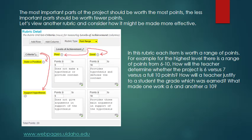In this rubric, each item is worth a range of points. For example, for the highest level there is a range of points from 6 to 10. How will the teacher determine whether the project is a 6 versus 7 versus a full 10 points? How will a teacher justify to a student the grade which was earned? What made one work a 6 and another a 10? It's very hard to tell from this descriptor.